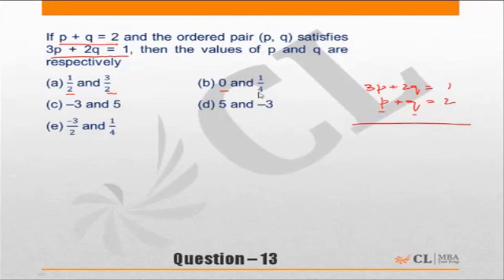Half plus 1.5 equals 2. 0 and 1/4, not possible—the sum has to be equal to 2. So choice B is incorrect. Minus 3 plus 5 adds up to 2. Perfectly fine.